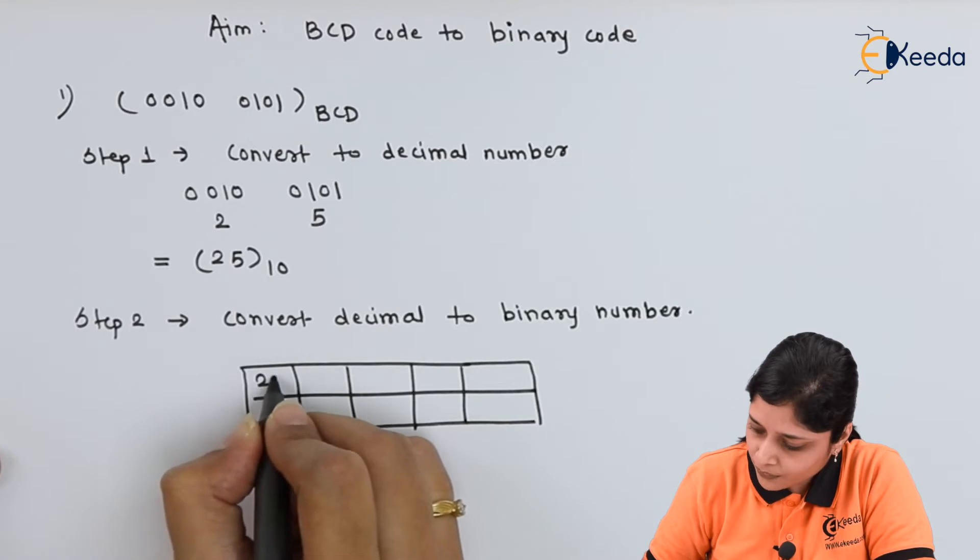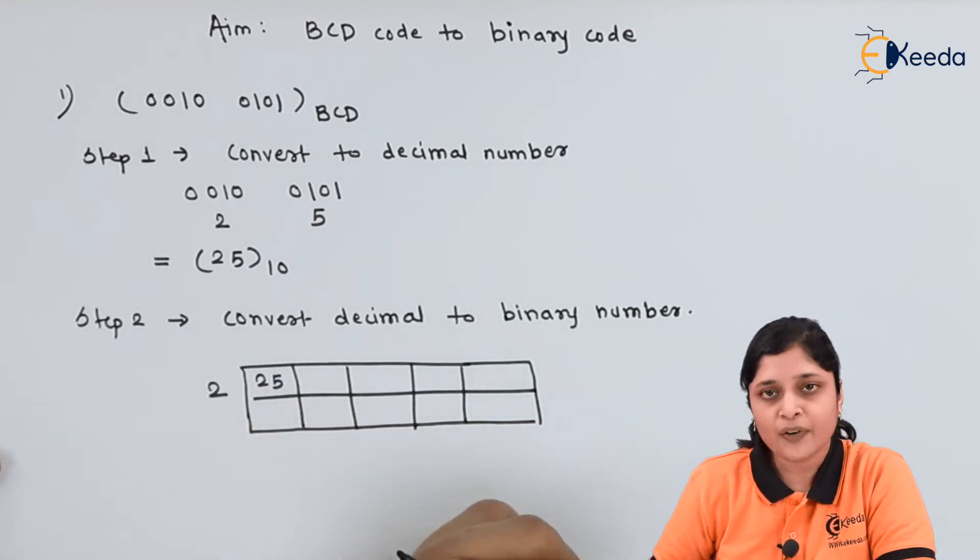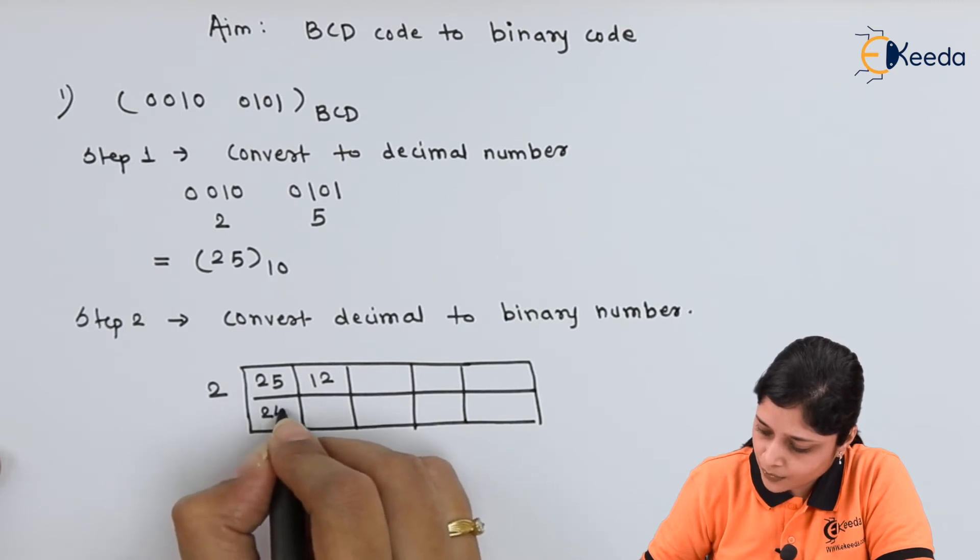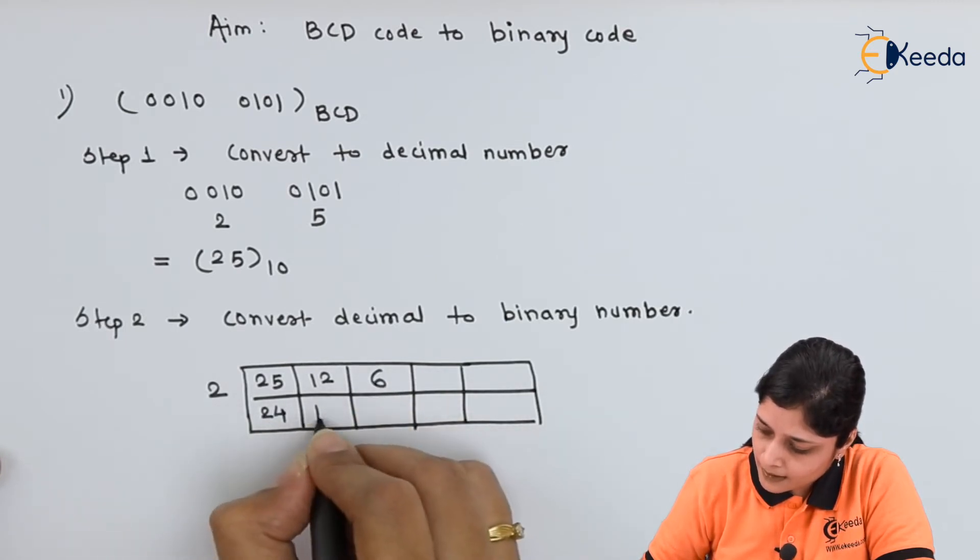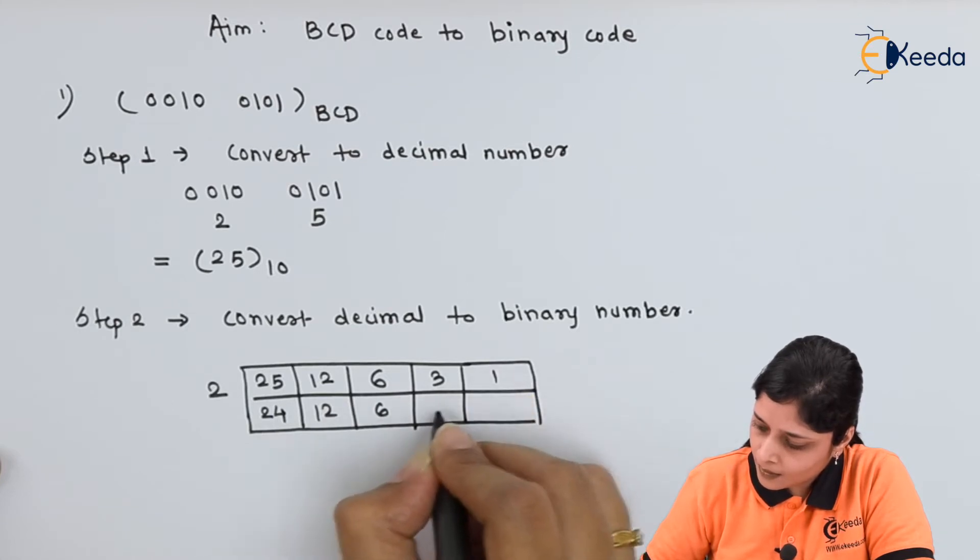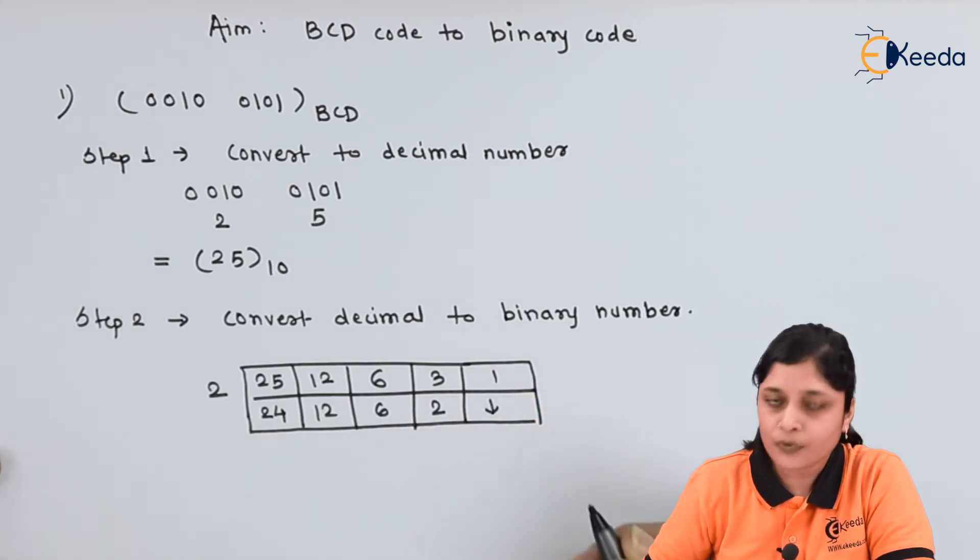Write down 25 here. Divide it by 2. So, 12 twos are 24. 6 twos are 12. 3 twos are 6. 2 ones are 2. We got 1.